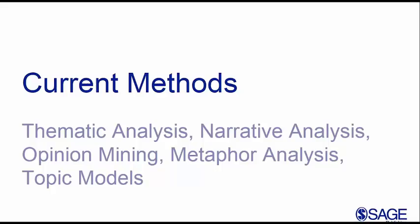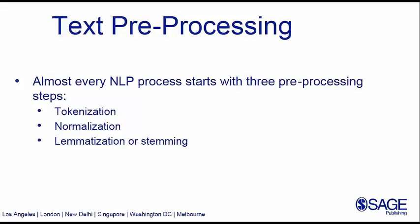As Gabe mentioned, there are a number of topics we cover in the books. For today's webinar, I want to go a bit more in-depth on three topics essential for any text mining project in the social sciences. One of them is text preprocessing. Pretty much any NLP or text mining project would start with preprocessing steps: tokenization, normalization, and lemmatization and stemming.